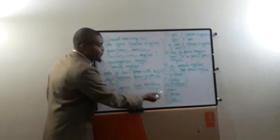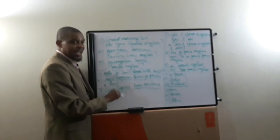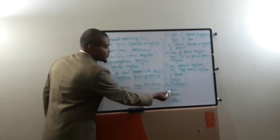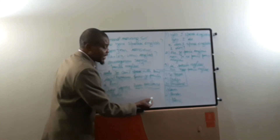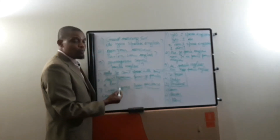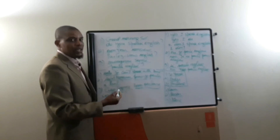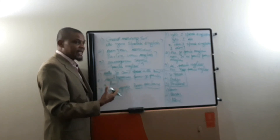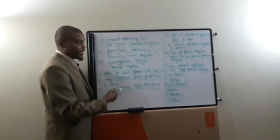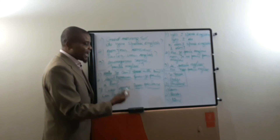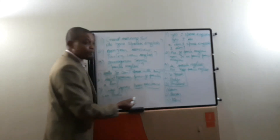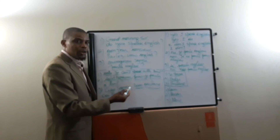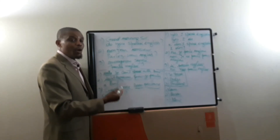We have the verb can: I can, you can, he can, she can, we can, you can, they can. In French you say pouvoir: je peux, tu peux, il peut, elle peut, nous pouvons, vous pouvez, ils peuvent, elles peuvent. In Italian, per coniugare il verbo potere al presente indicativo, si dice: posso, puoi, può, possiamo, potete, possono.